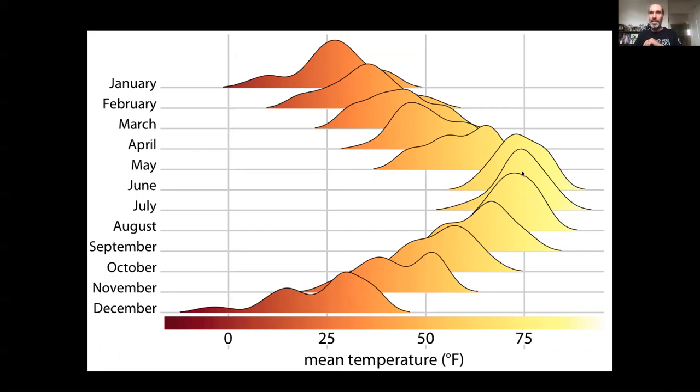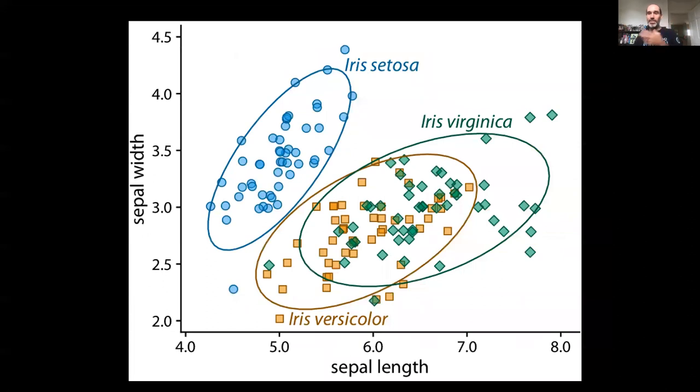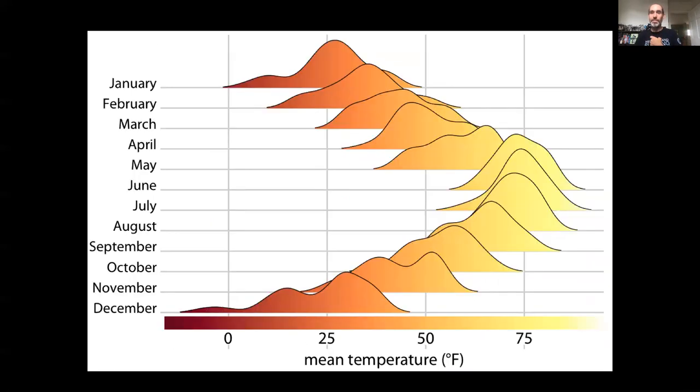And similarly, if we went back to this figure, if this figure had still had a legend, you wouldn't have wanted one legend for the shapes and another legend for the colors. You'd want both of those pieces of information encoded in the same legend, if you had a legend. Again, you can get rid of legends even better.